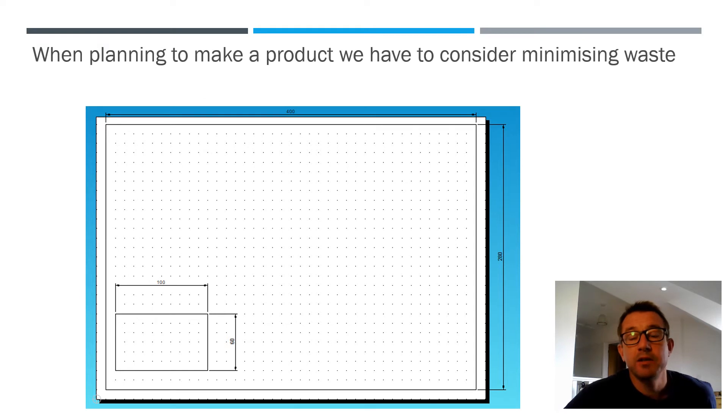So when we're planning to make a product, we have to consider how we can minimize waste. And here's a little challenge. We have a piece of material that's 400 millimeters by 280 millimeters tall. And we have a dimension which is 100 millimeters by 60. We have a piece of material. How many pieces of this material can we get on this sheet? And that's quite a challenge in a way that we have to start considering where we cut and so on. So have a little think about that. See if you can work that out before you move on to the next slide.